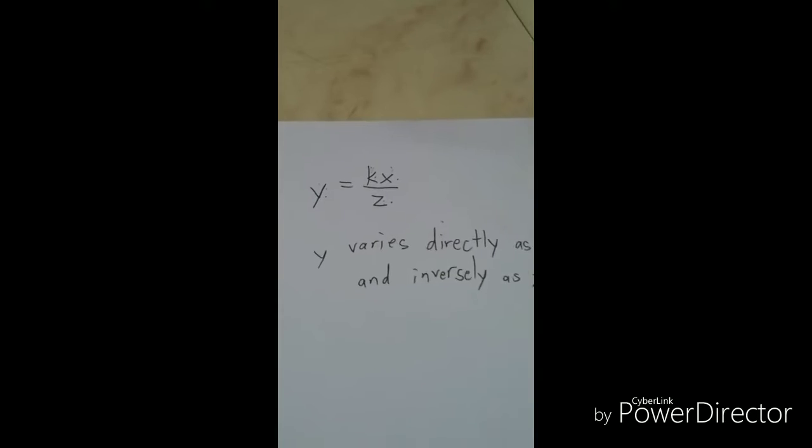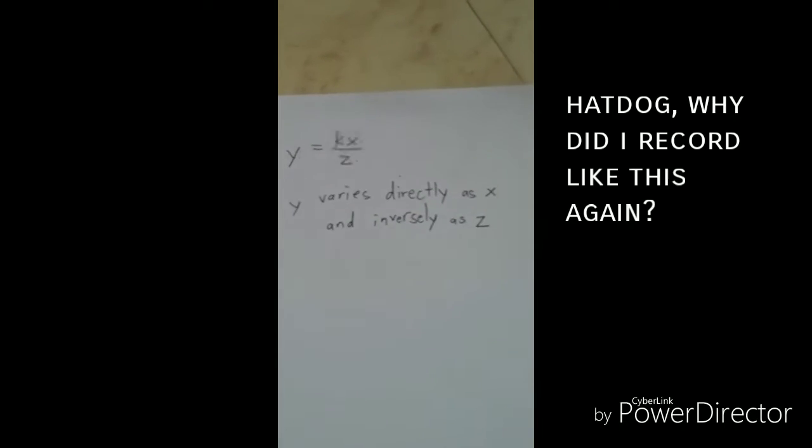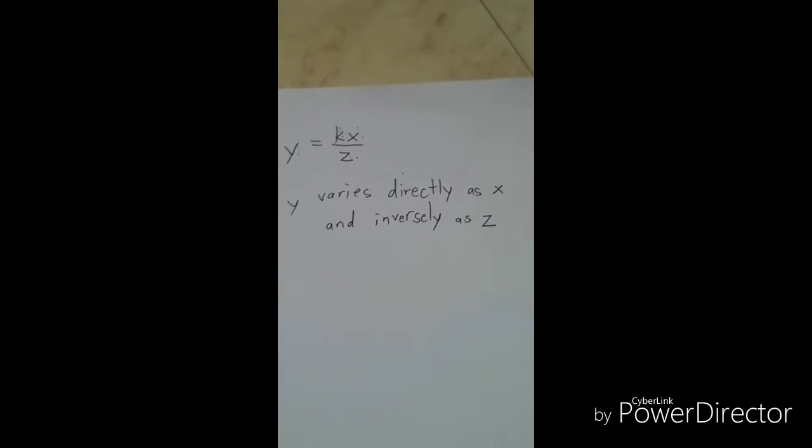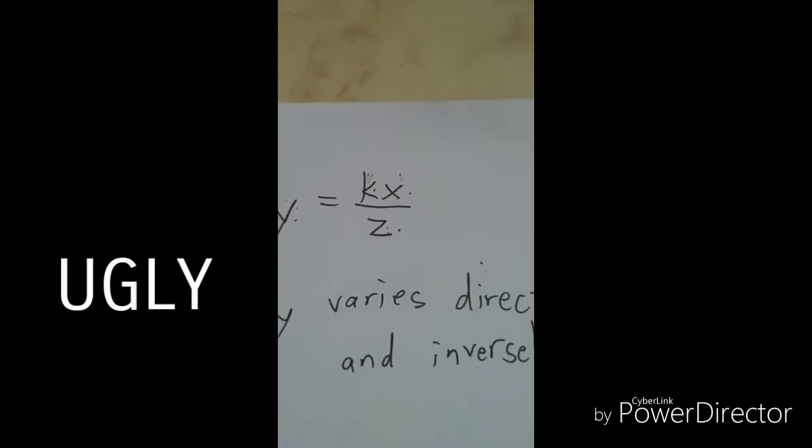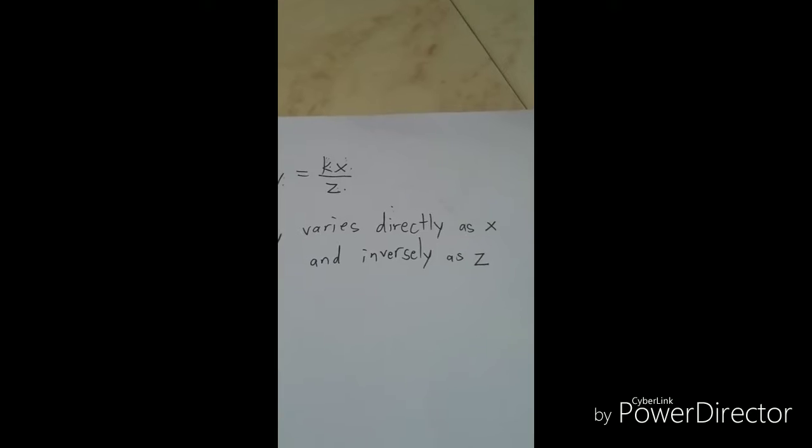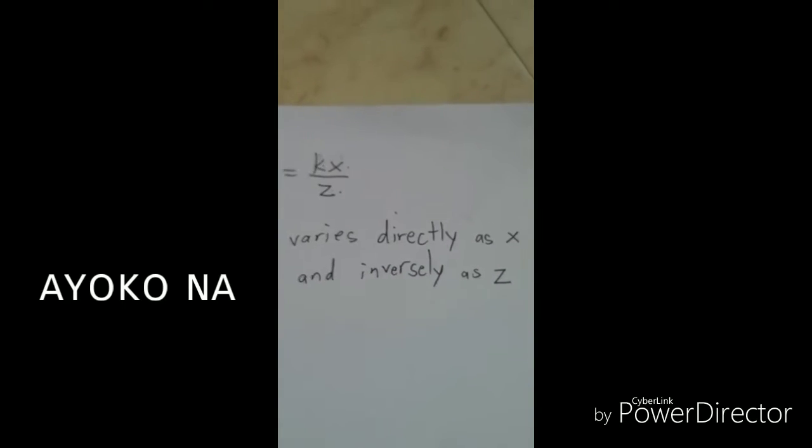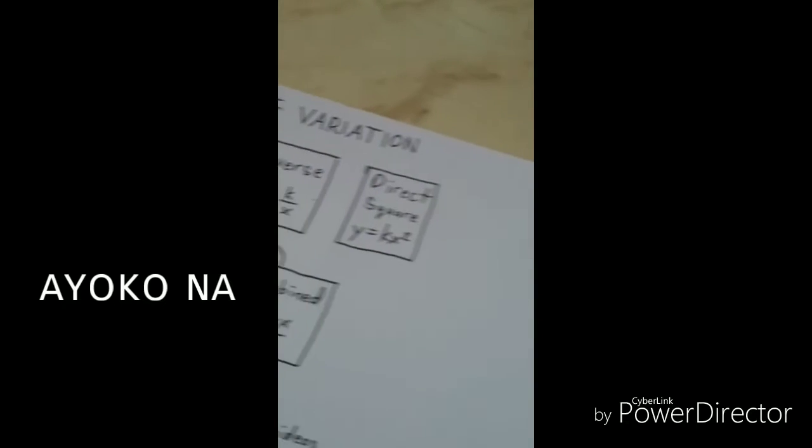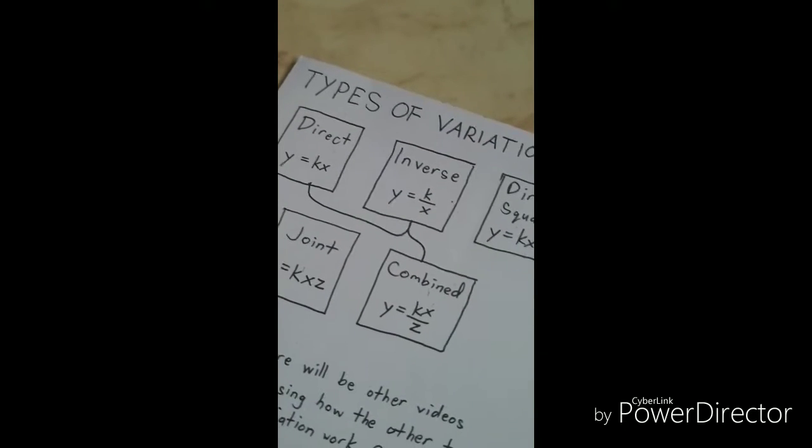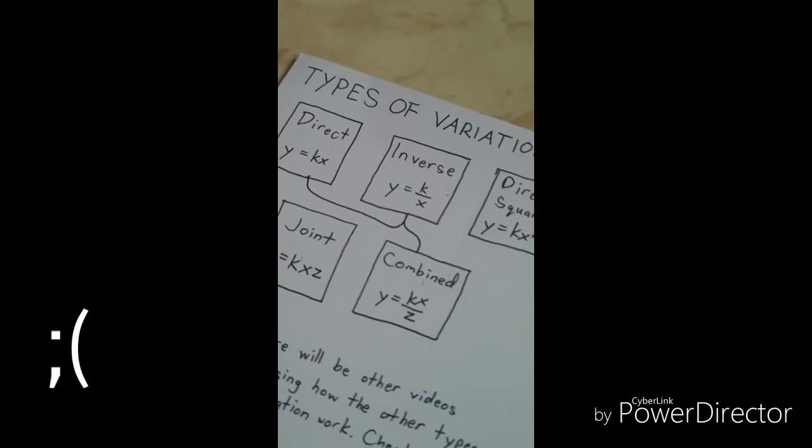Combined variation is usually written like this, y equals kx over z, and it's read as y varies directly as x and inversely as z. Y, x, and z can change depending on the variables in your problem. And using the values given in your problem, you can solve for the constant k, which is multiplied by x. If you look closely at how you write and read combined variation, you can see that yes, it is a combination of direct and inverse variation.